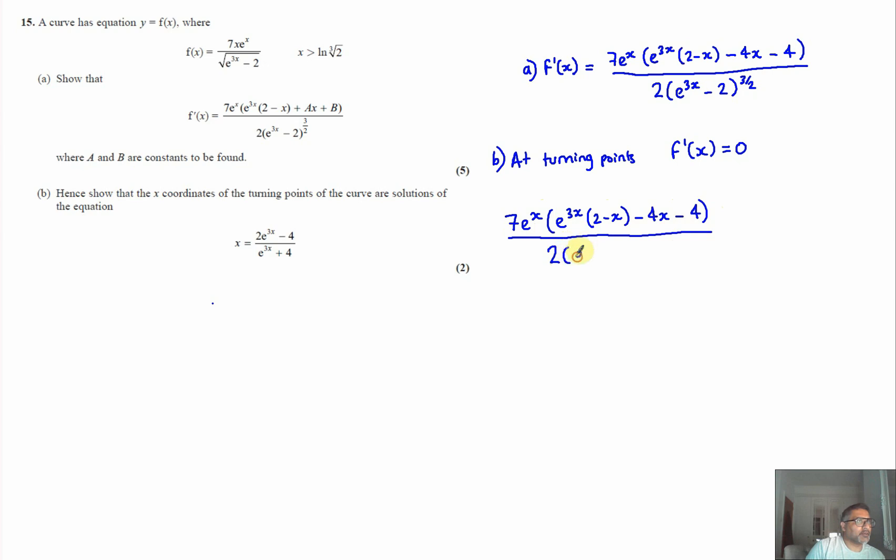four over two times e to the three x minus two to the three over two is equal to zero. Now if I multiply both sides by the denominator and that cancels out, so what we're left with then is seven e to the x